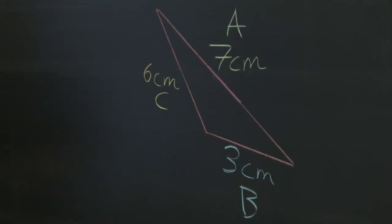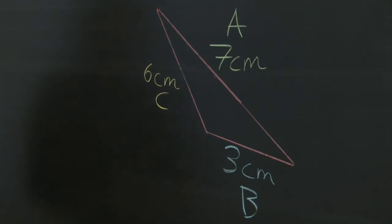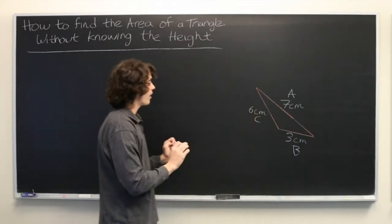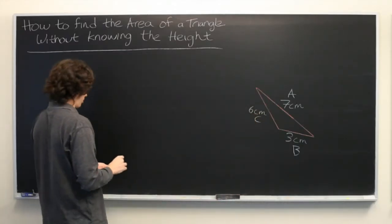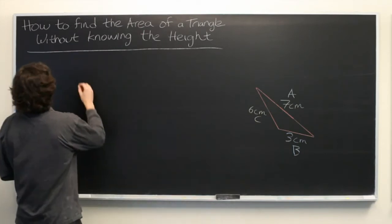We can compute the area directly from these three numbers without ever having to deal with angles or the height by using what's known as Heron's formula.